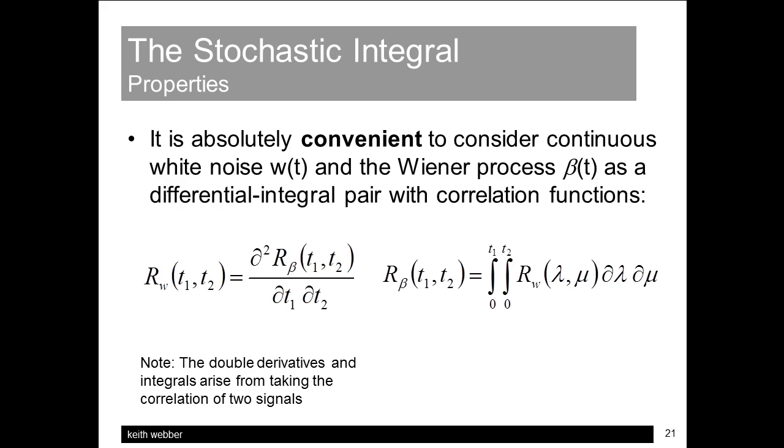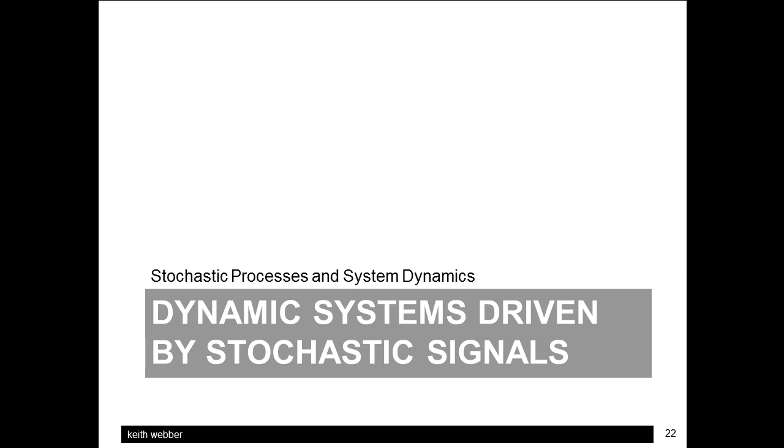And we can consider, practically, the Wiener process and white noise to be an integral differential pair. Now this final section, in preparation for part 6, contains a brief review of how dynamic systems are modelled, leading on to consideration of deriving their response to stochastic signals.